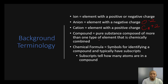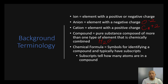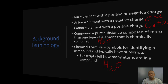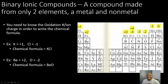A compound is a pure substance composed of more than one type of element that is chemically combined. Our most famous chemical compound is H2O. A chemical formula is assembled for identifying a compound and typically has subscripts. Subscripts tell how many atoms are in a compound — for example, the subscript 2 in H2O tells us there are two hydrogens and one oxygen.